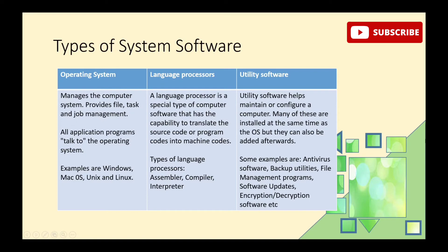Next, utility software. Utility software helps to maintain, configure, and support the computer system. When we install the operating system, utility software is also installed. Examples include antivirus software, backup software, file management programs, software updates, encryption, and decryption software.